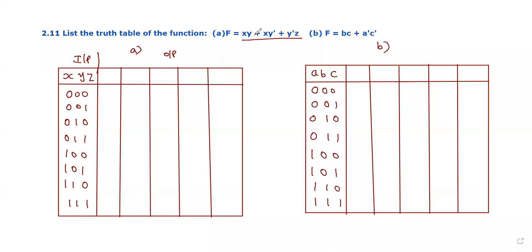The Boolean function has xy as the first term, xy' as the second term, and y'z as the third term. First, we'll find y' variable. y' is the complement of y, so the values are: 1, 1, 0, 0, 1, 1, 0, 0. Next, we'll find each product term. For xy, we apply the AND operation.